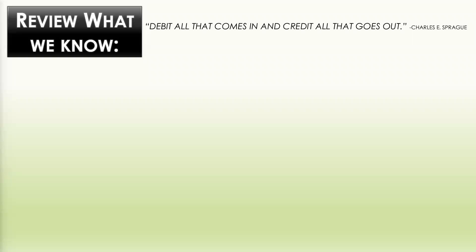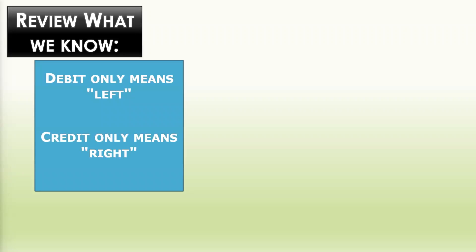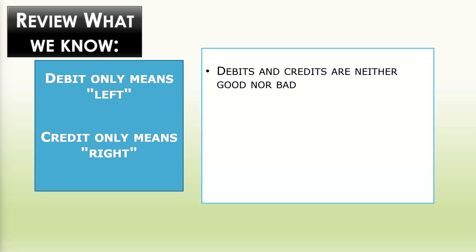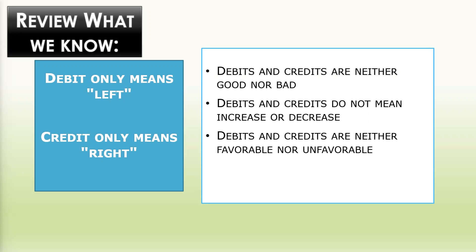Let's review what we know from Part 1. Debit — all that comes in — and credit — all that goes out. Debit only means left, and credit only means right. Debits and credits are neither good nor bad. They do not mean increase or decrease. Debits and credits are neither favorable nor unfavorable, and for every debit, there must be a credit.